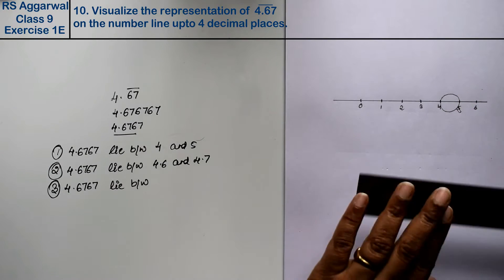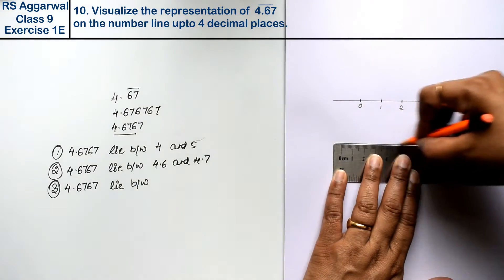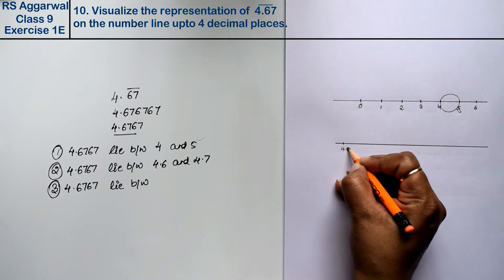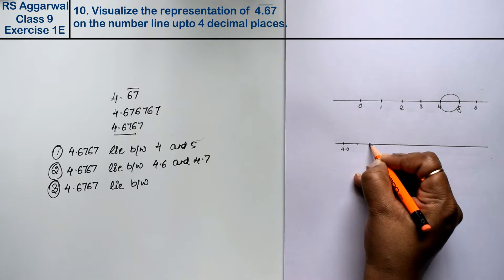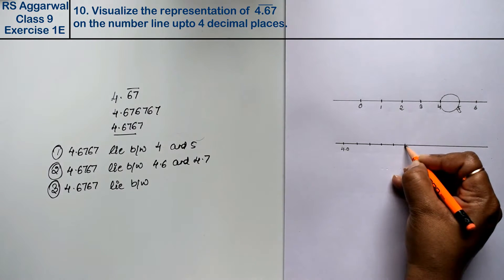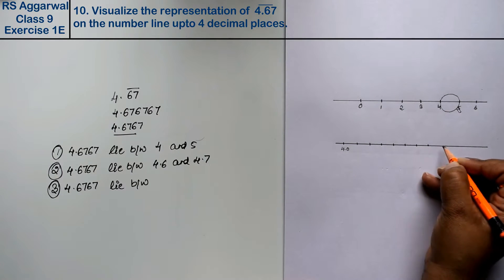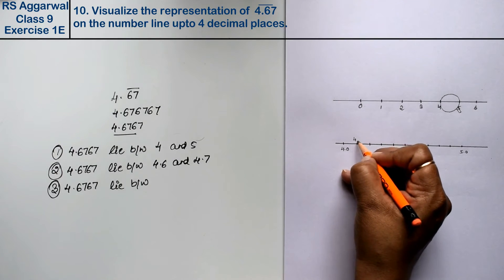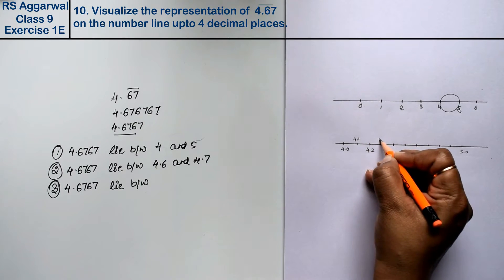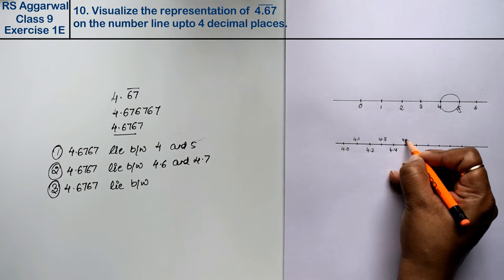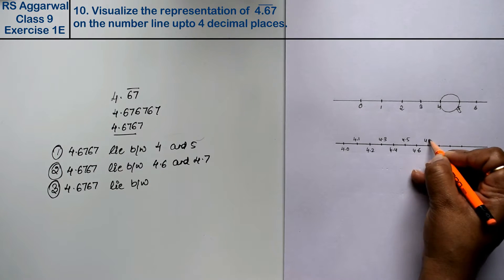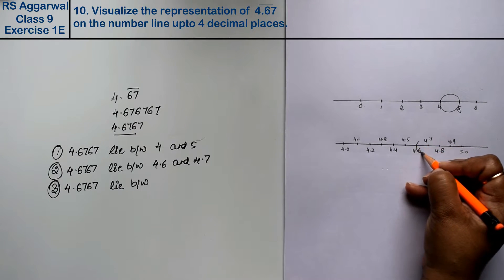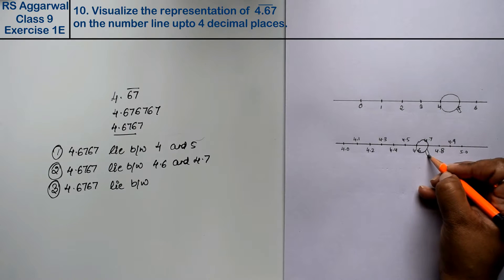Now let's move on to the other line of 4 and 5 in between values. Here is 4.0, 10 values: 1, 2, 3, 4, 5, 6, 7, 8, 9, and 10. So this is 5.0. So this is 4.1, 4.2, 4.3, 4.4, 4.5, 4.6, 4.7, 4.8, 4.9. Now let's move on to the other line of 4.6 and 4.7. We will put it under the line of 4.6 and 4.7.